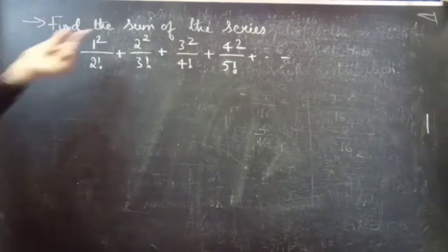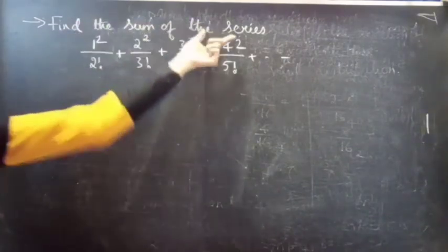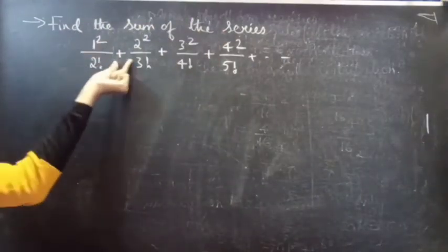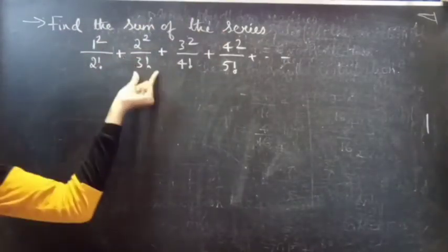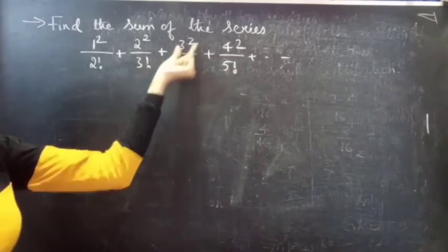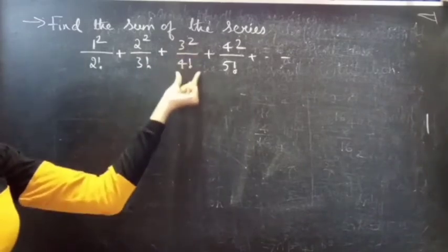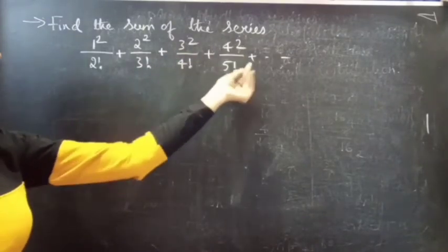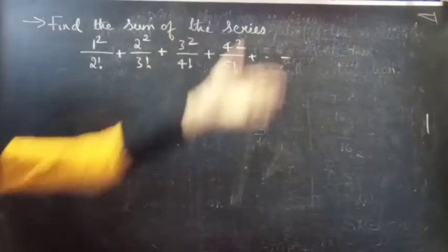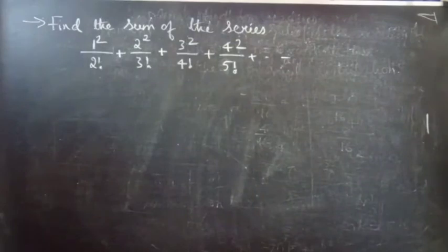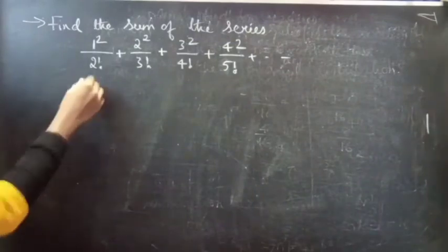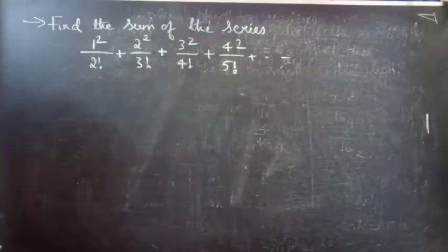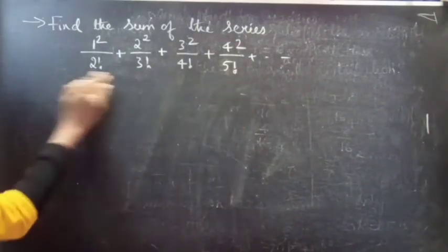Find the sum of the series: 1 squared by 2 factorial plus 2 squared by 3 factorial plus 3 squared by 4 factorial plus 4 squared by 5 factorial plus so on. We have to find the sum of this series.